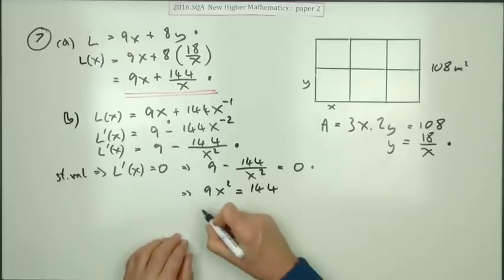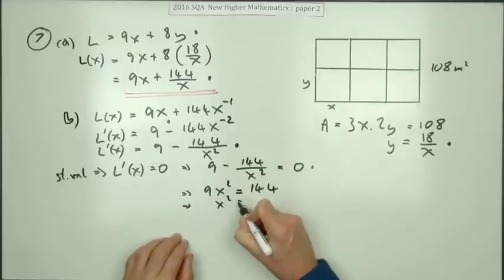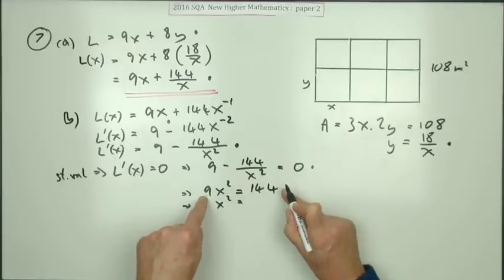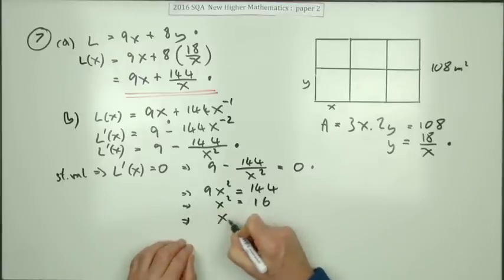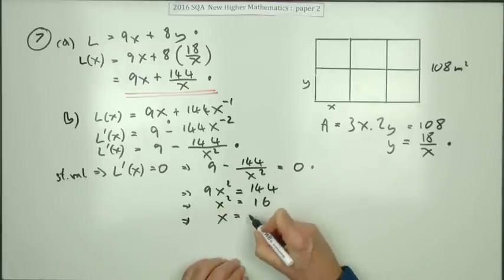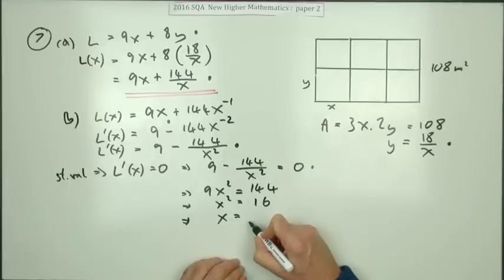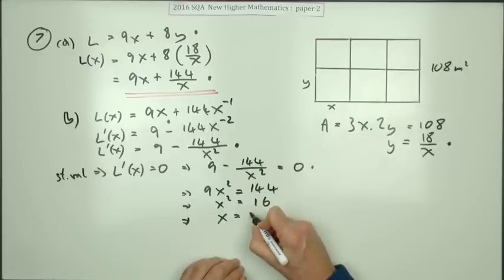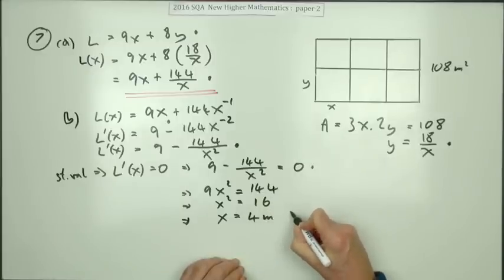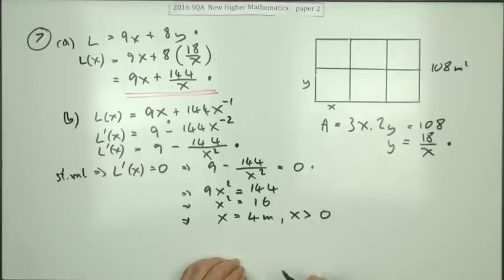So the next part would be x² is dividing by 9, that goes 16. Now the square root, now it's not plus or minus the square root of 16. X has to be greater than zero, it's just x equals 4. I'll give the reason: x has to be greater than zero.